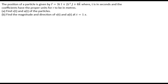Hello everyone. Let's understand this question. The position of a particle is given by r vector equals 3t i cap plus 2t squared j cap plus 8k cap, where t is in seconds and the coefficients have the proper units for r to be in meters. In part a we need to find the velocity and acceleration of the particle. In part b we need to find the magnitude and direction of velocity and acceleration at t equals 1 second.